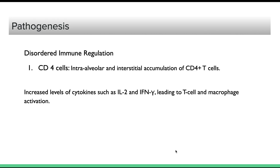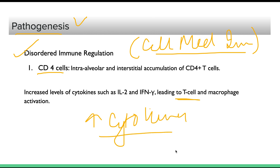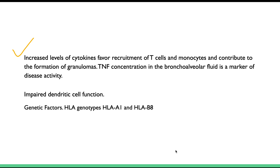Regarding pathogenesis, the etiologic agent behind sarcoidosis is not clear. It is thought to be due to disordered immune regulation, especially disordered cell-mediated immunity. CD4 cells are involved, as there is intra-alveolar or interstitial accumulation of CD4 cells and increased levels of cytokines, leading to T-cell and macrophage activation. Macrophage activation releases more cytokines, which further convert macrophages into epithelioid cells and drive granuloma formation.